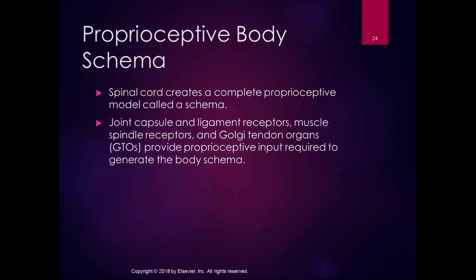The spinal cord creates a complete proprioceptive model of the body called a schema. Using information in the background non-consciously, we use input from spindle receptors and Golgi tendon organs to generate this body schema. It's used to plan and adapt movements — for example, to hit a tennis ball you need to know the initial position of the arm to plan whether to move the racket hand up or down.